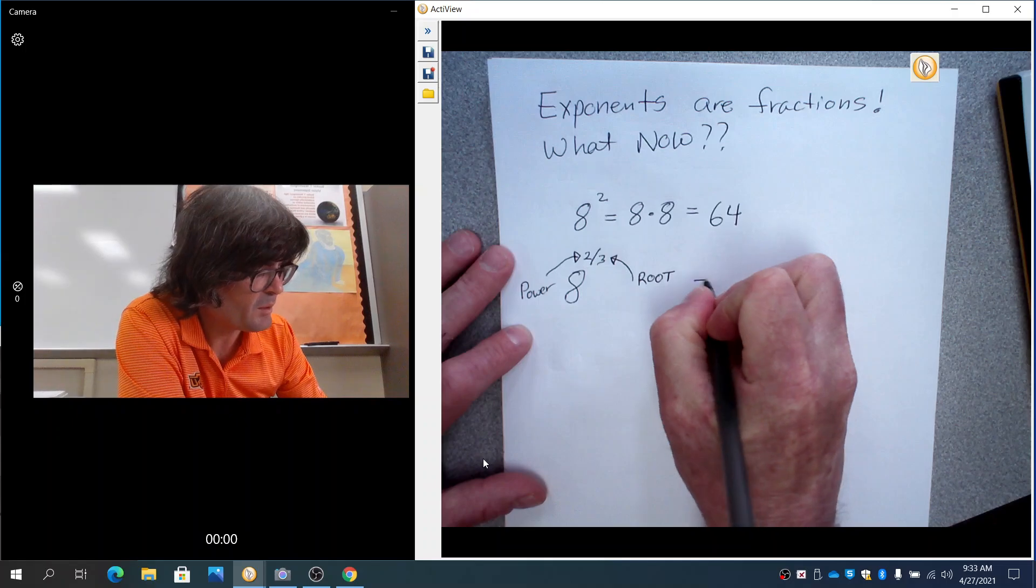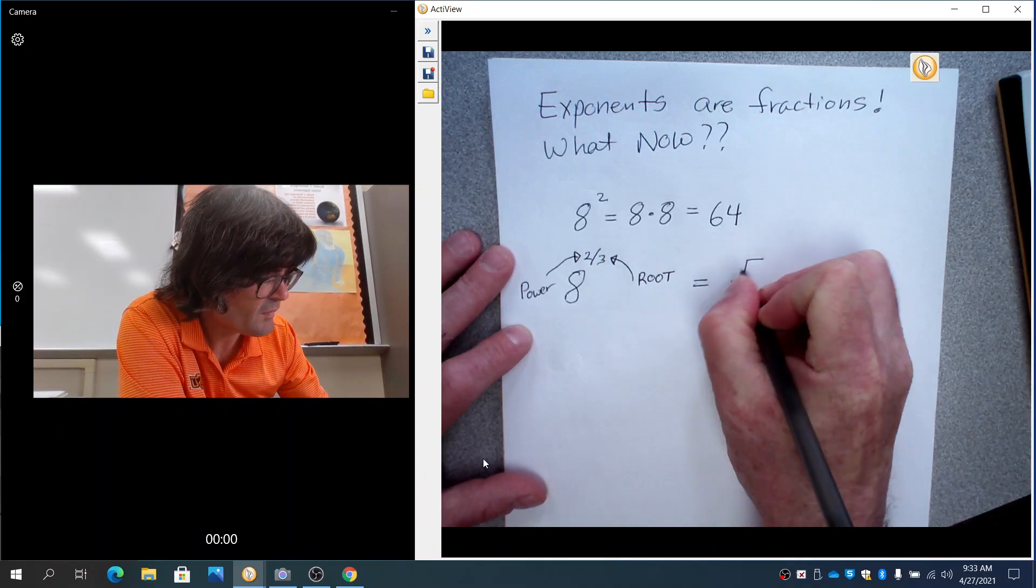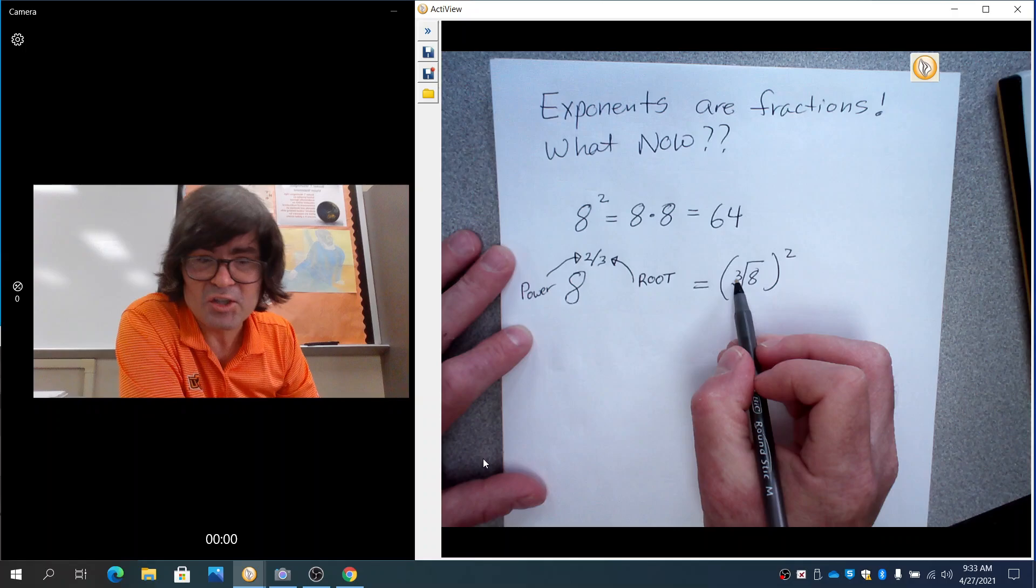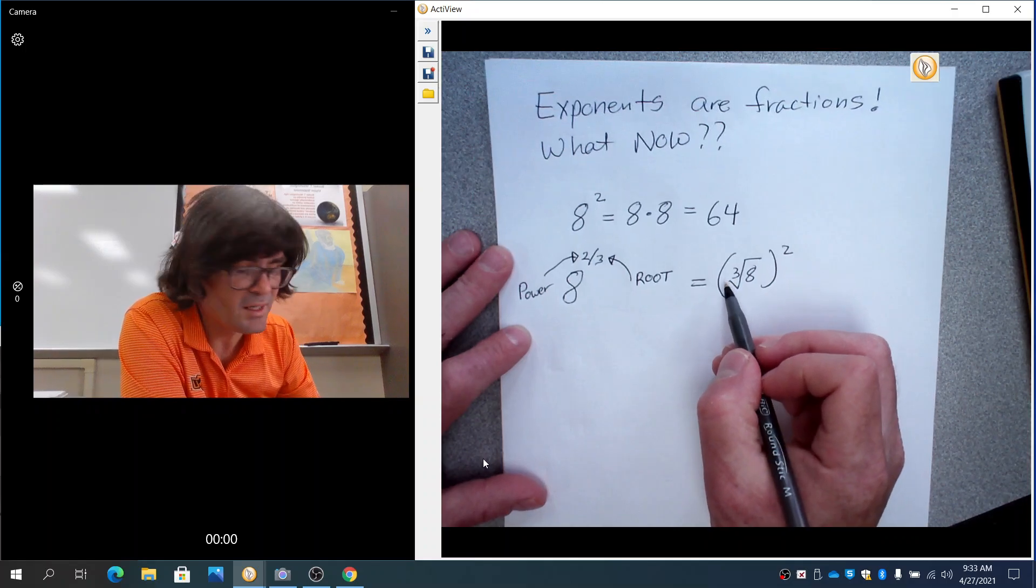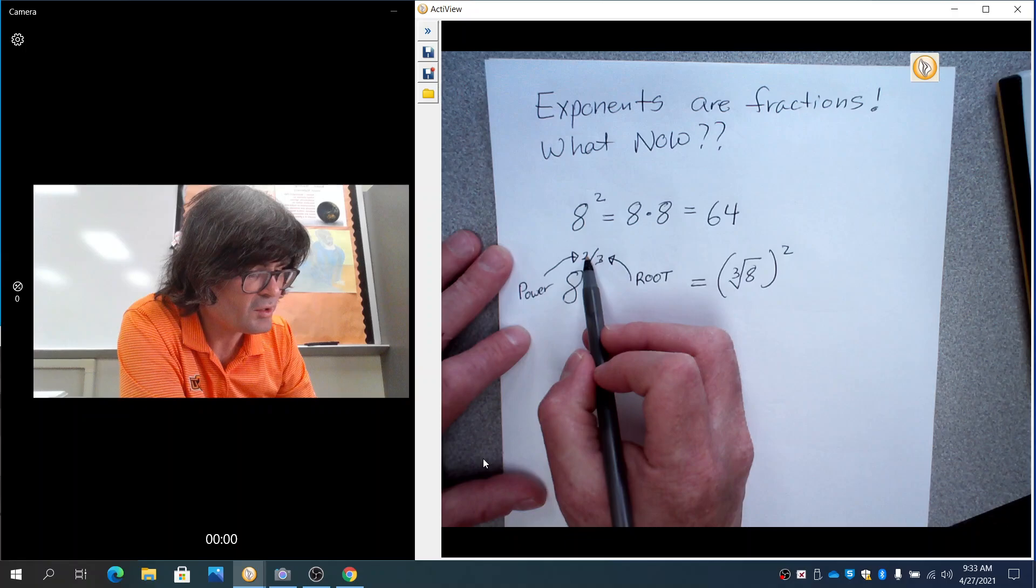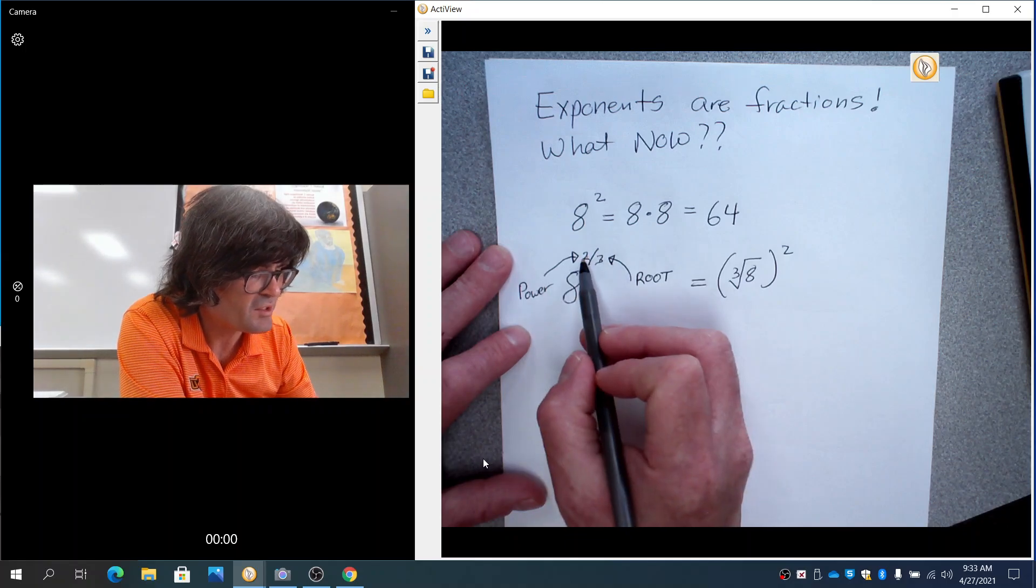So what I'm going to do here is I'm going to rewrite this as the cube root of 8 squared. I got the cube root because of the 3 on the bottom of this fraction, and then I got the square from the 2. This is the power. This is the root.